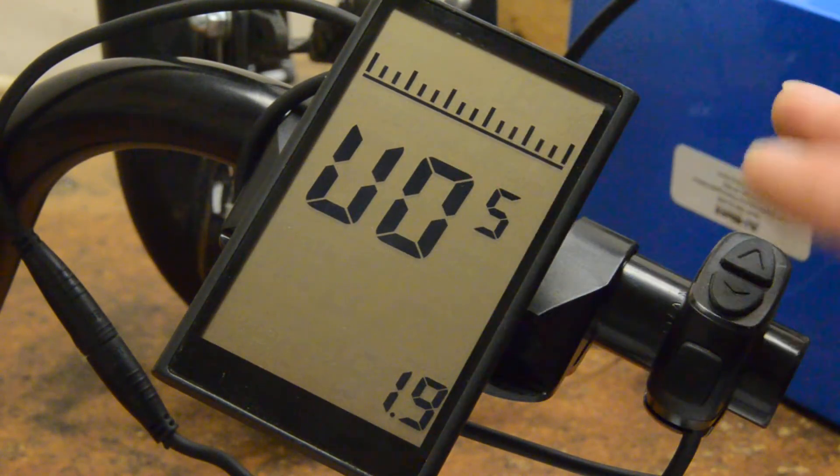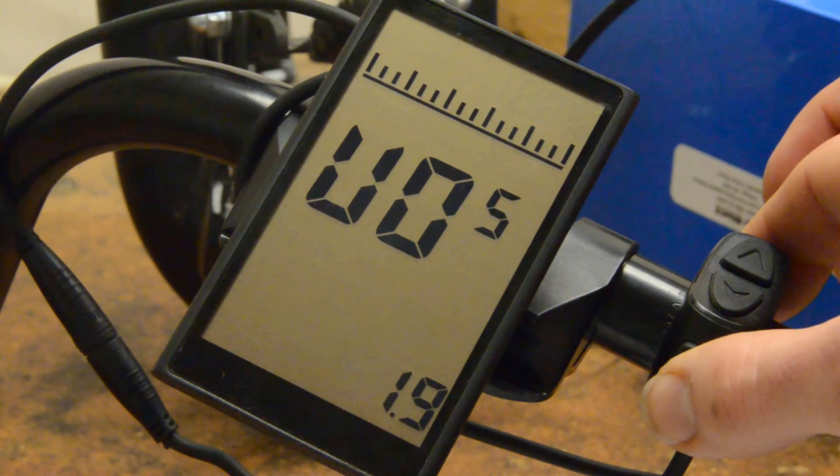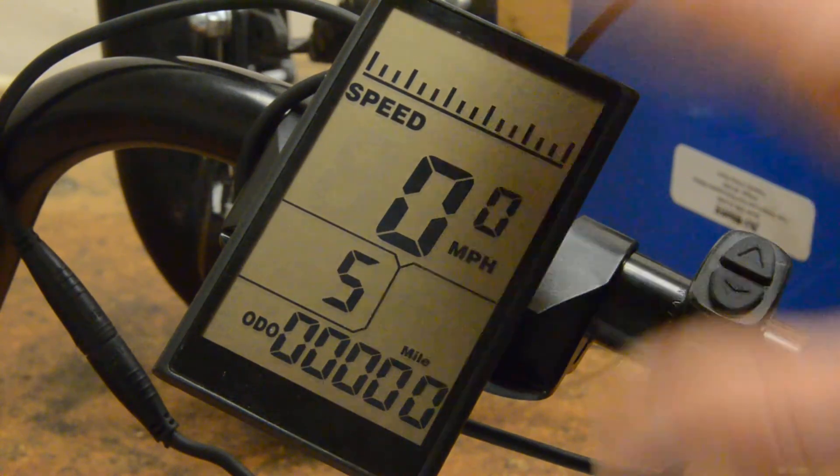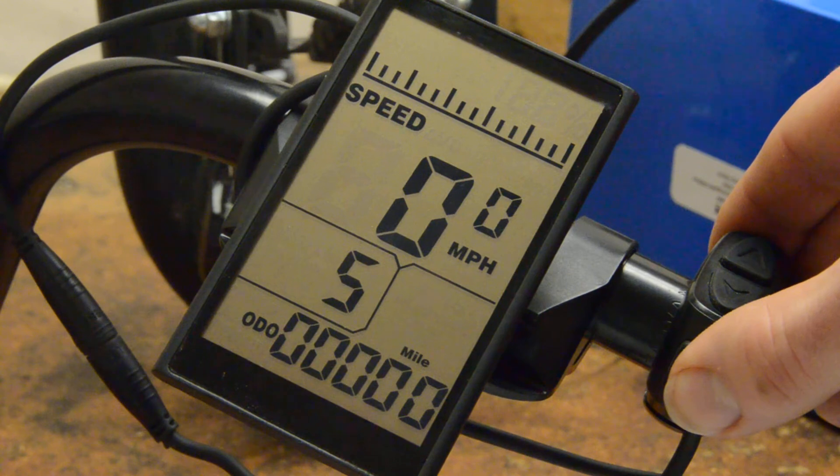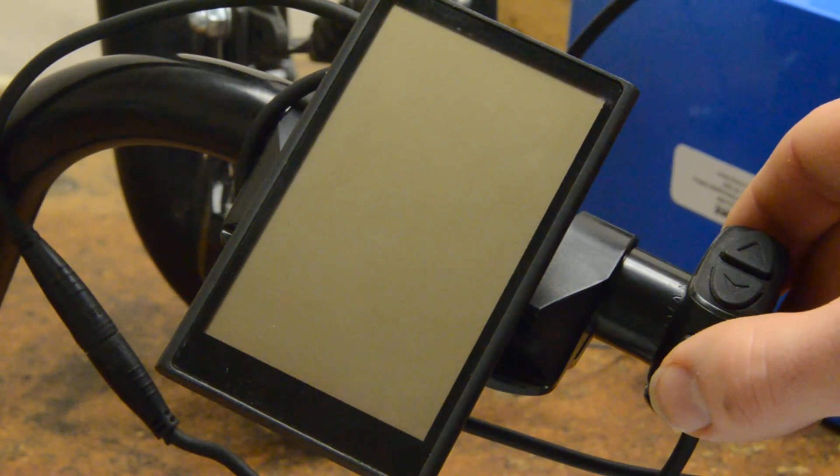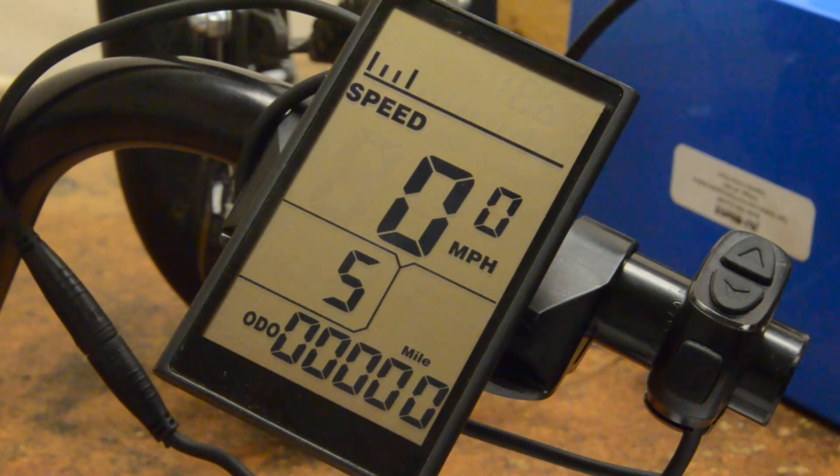So now that I've got all the settings in the way I like them, I'm going to press and hold the M button for three seconds. Now for your particular battery, you may want different settings. But this is a good batch of settings for an eBike kit 48 volt lithium battery.